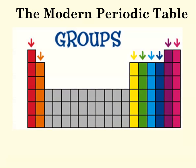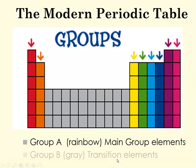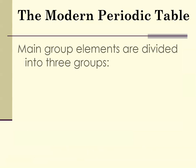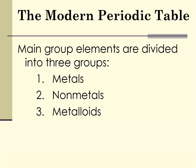The groups are the vertical columns, and the group A elements are the rainbow-colored ones. The transition elements are shown in gray, and this version doesn't show the inner transitions, but they're there as well. The main group elements are divided into three categories: metals, nonmetals, and metalloids.